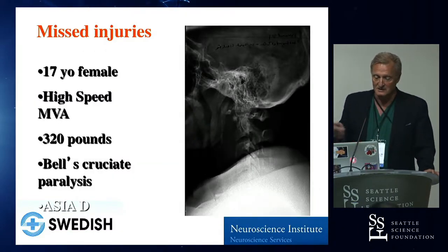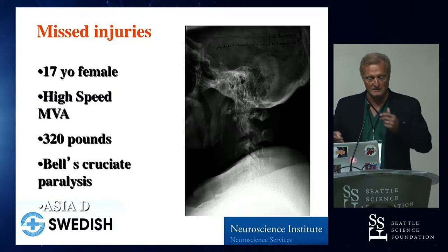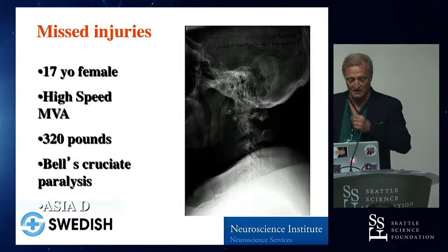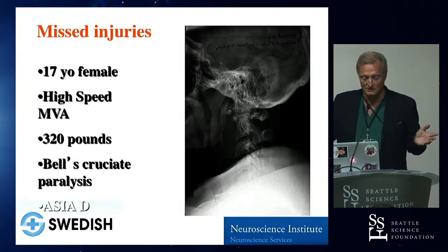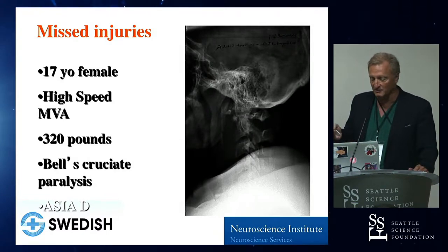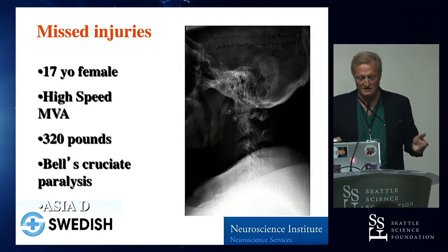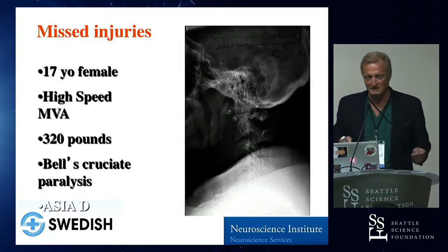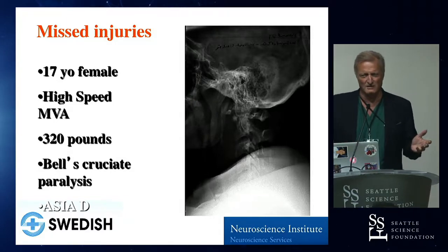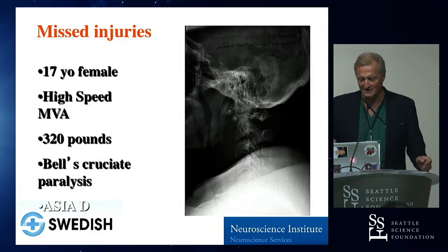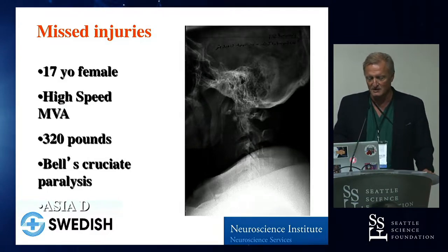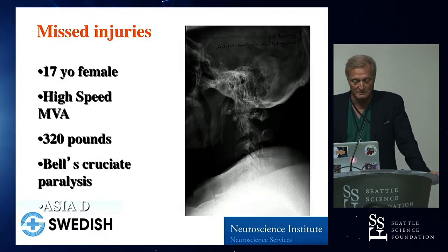This is a classic case — we tried to double up educational efforts. A 17-year-old girl, high-speed car crash, 320 pounds, weird-looking fracture. She had what was basically deemed either a clavicle fracture or a scapular fracture. She had shoulder weakness on both sides. Turns out this was a Bell's cruciate paralysis. You can see the big soft tissue swelling in her neck.